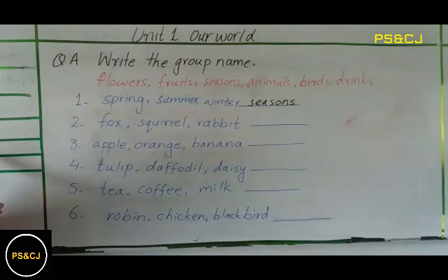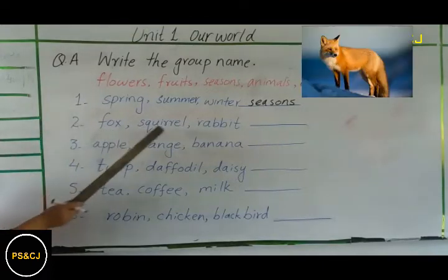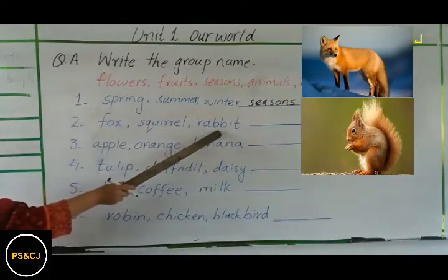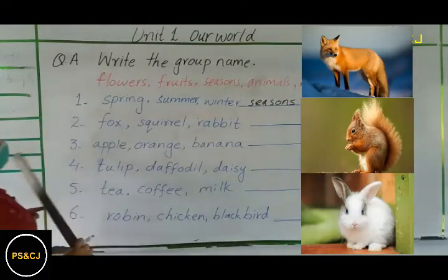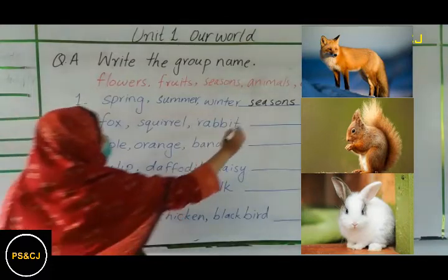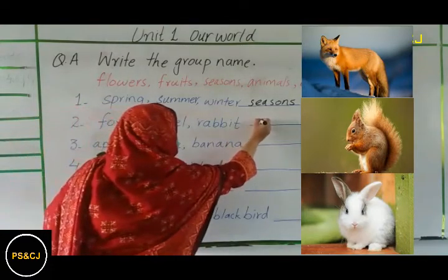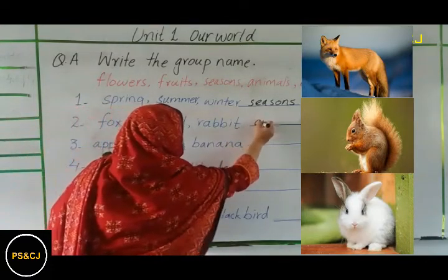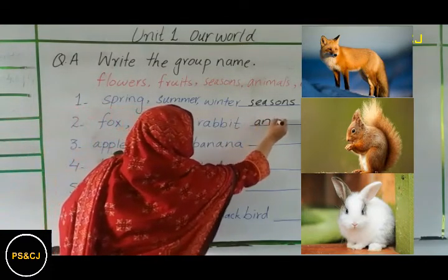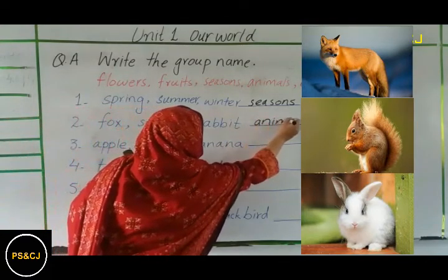The second one: fox, squirrel, rabbit — their group name is animals.